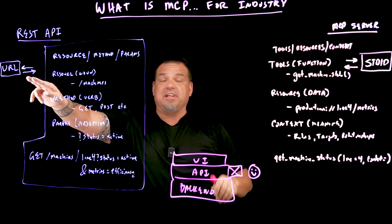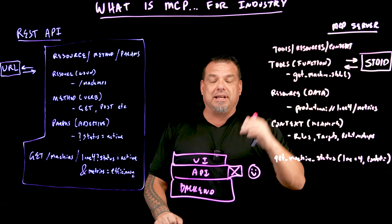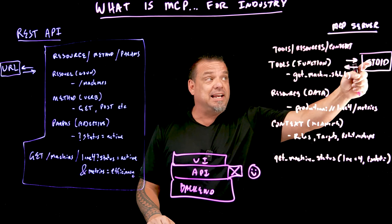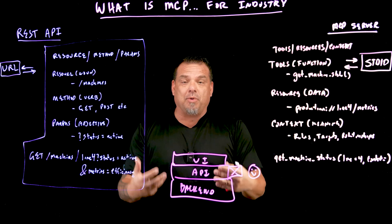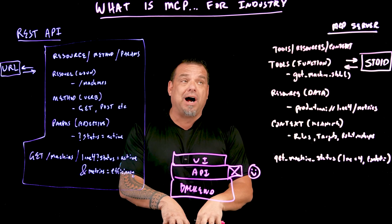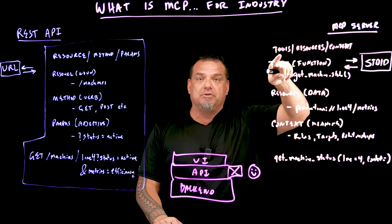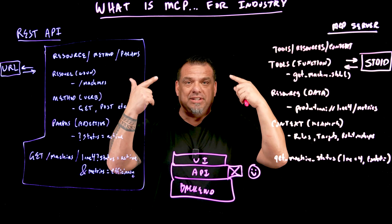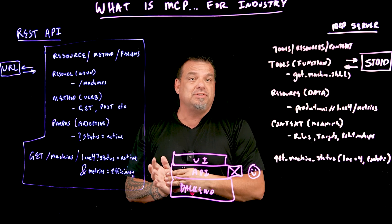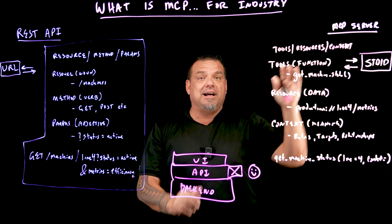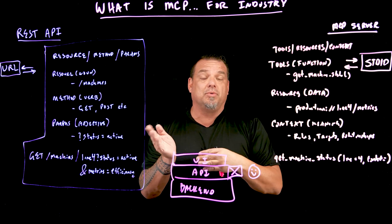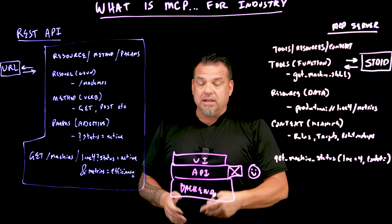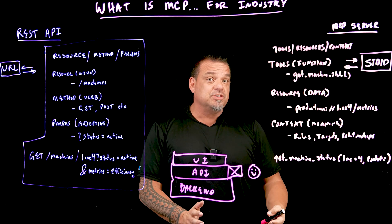An MCP server, instead of a URL, has an STDIO server. Your Claude Desktop or ChatGPT Desktop has a configuration to connect to this MCP server. When you ask the natural language question — 'which line is performing worst and why?' — it looks at the list of tools, resources, and context available in that MCP server and reasons: can I use those tools to figure out which line is performing the worst and why? Resources are what we pass in and consume; context is what is returned so the agent can further reason. What we get at the end is the agent telling us 'line four is working the worst, and here's why.'